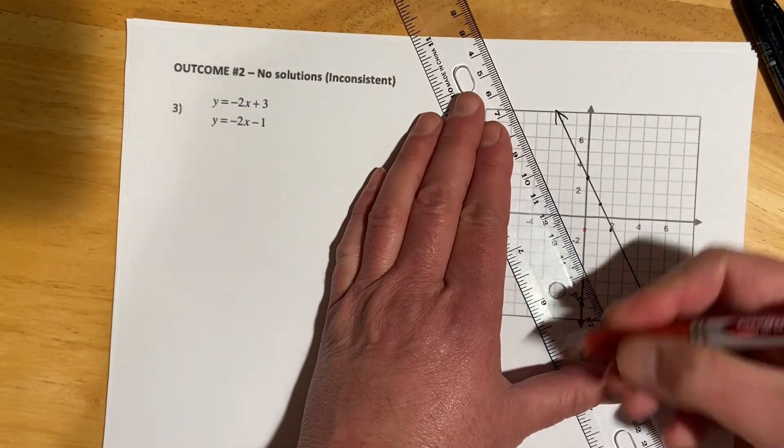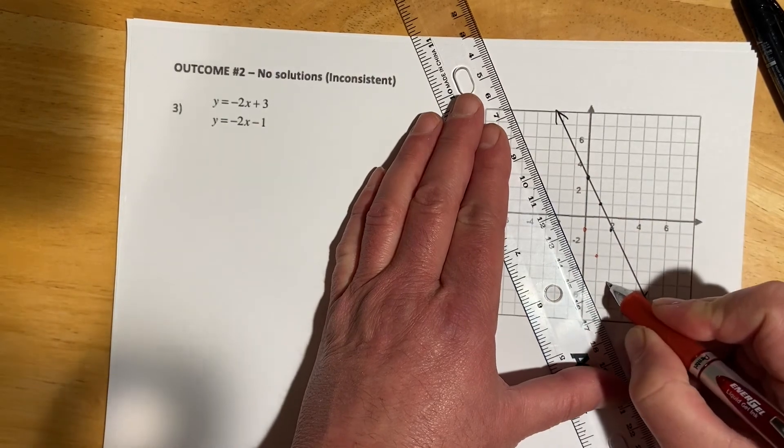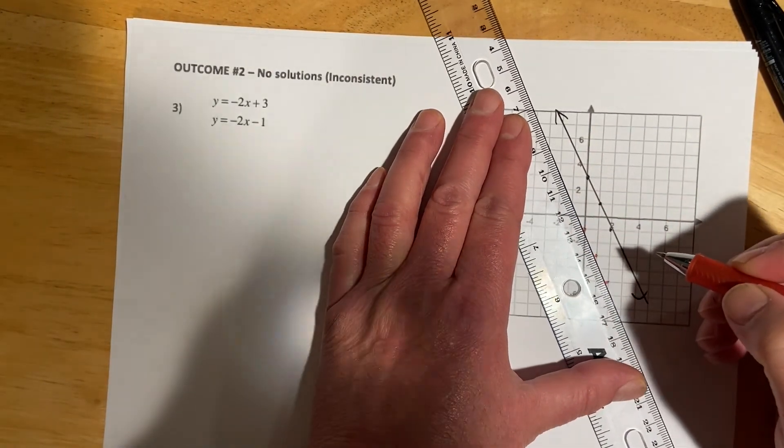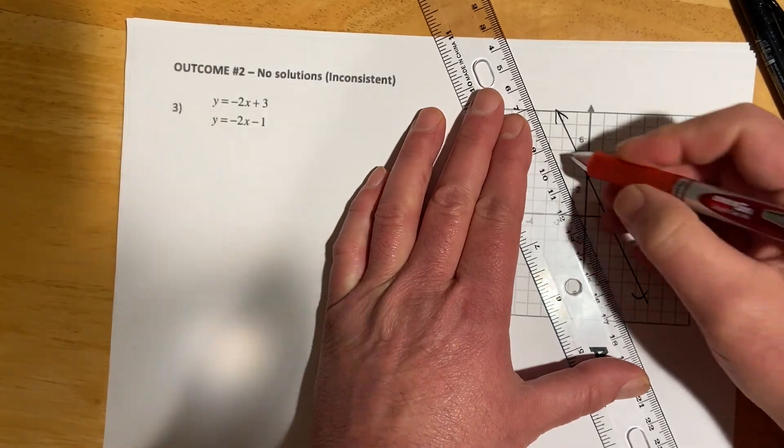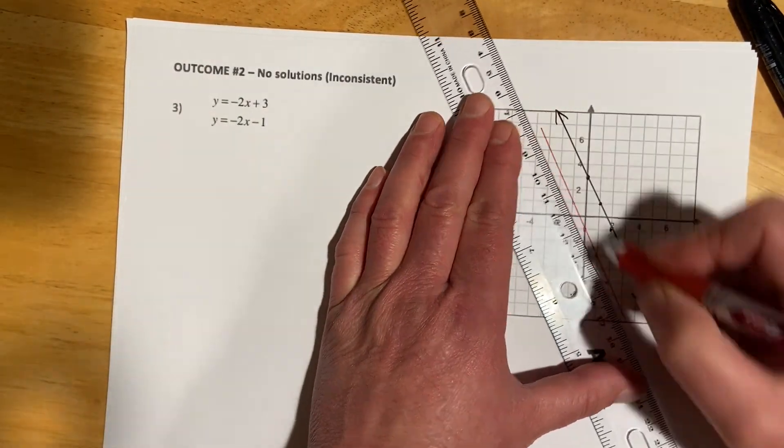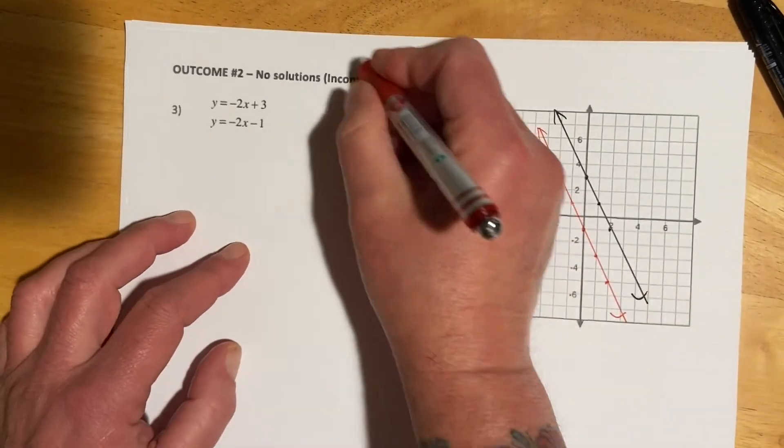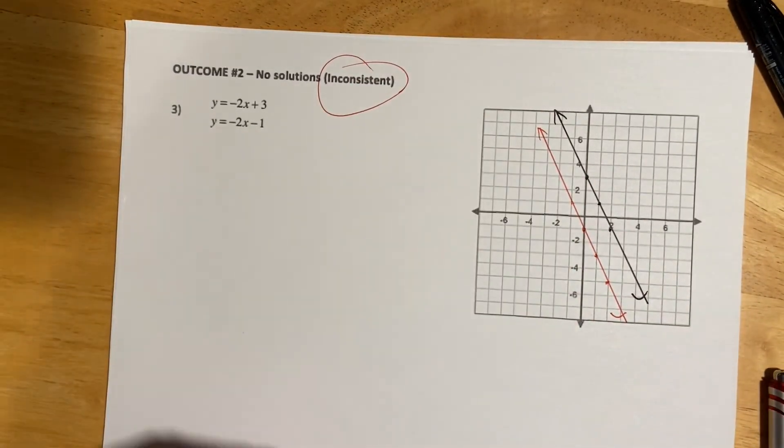And then for this next one, the y-intercept is at negative 1 and then it has the exact same slope. So it's just going to track it forever. So this would look something like that. And then the parallel, so that's where this would be inconsistent and we'll have no solution.